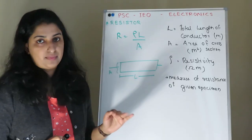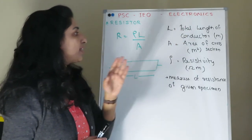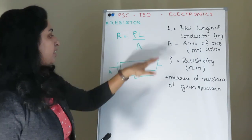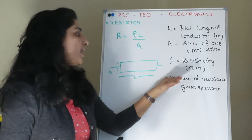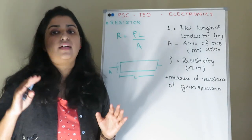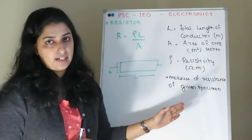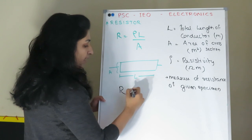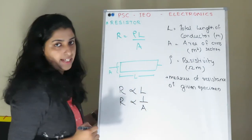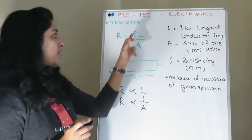The resistance formula is R equals rho times L divided by A, where rho is the resistivity (in ohm-meters), L is the total length of the conductor, and A is the cross-sectional area. Resistance is directly proportional to length and inversely proportional to area.